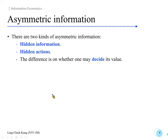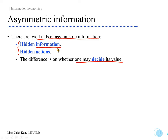We need to do some categorizations. There are two kinds of asymmetric information: hidden information and hidden actions. The difference is on whether we may decide its values or not. If I secretly know one thing that you don't know but I cannot change that information, that's hidden information. On the other hand, if I know something that you don't know and I can change it, that's a hidden action.